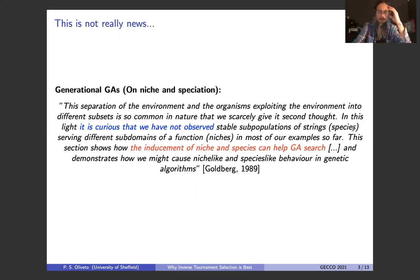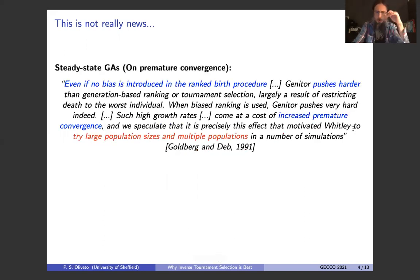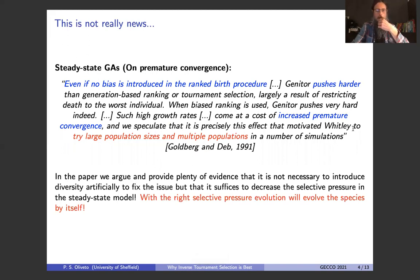So this is for generational GAs. What about steady state GAs? Goldberg and Deb in the first FOGA conference argue that even if uniform selection is used, so no positive selection towards better individuals, steady state GAs have higher selective pressure than generational ones. And if you do use some positive selection, for example tournament or ranking selection, you get even more increased premature convergence, which is why Valerie Ridley, who was one of the inventors of steady state GAs, was trying, according to Goldberg and Deb, to use large populations and multiple populations.